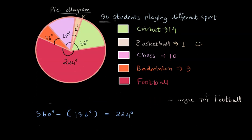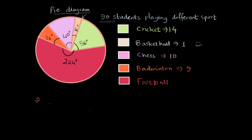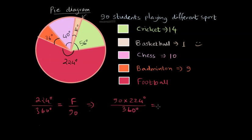The number of students playing football is found by: 224/360 = F/90. Multiplying both sides by 90, F comes out to be 56. So out of 90 students, 56 are interested in football. This is how, by looking at the central angle in the pie diagram and knowing the total number of students, we can find the actual values for each sport.